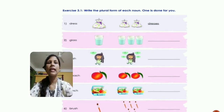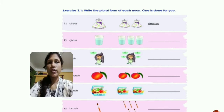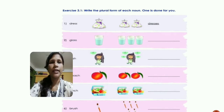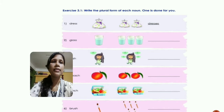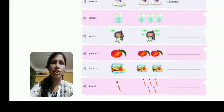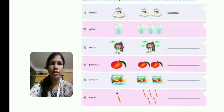The next one is 'glass' — it ends in double 'S,' so it becomes 'glasses.' The remaining words — wish, peace, peach, lunch, and brush — you will write the plural forms of these words by yourself.